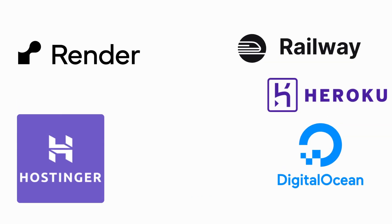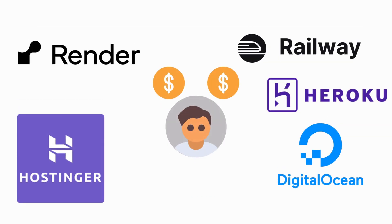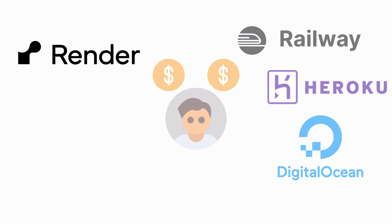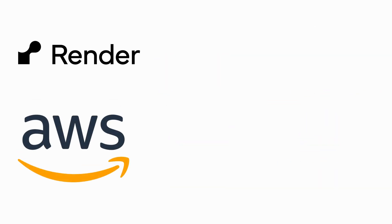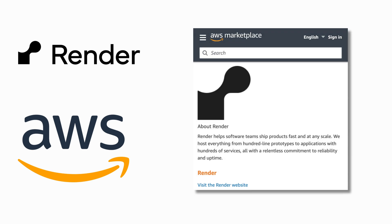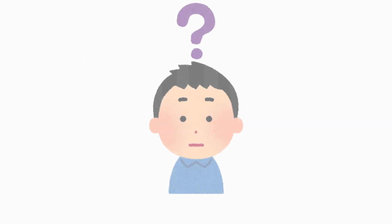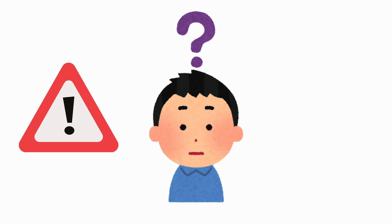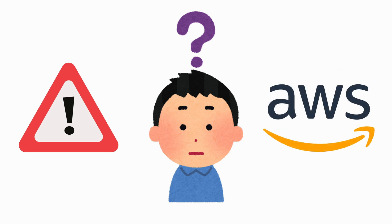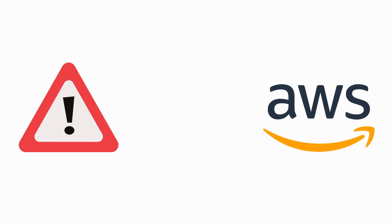But here's a real secret. Those platforms are often just middlemen. Take Render, for example — Render is built on top of Amazon Web Service, and we can see that on the Amazon Web Service Marketplace. So the question is, why use a middleman with more limitations when we can go directly to the source ourselves?